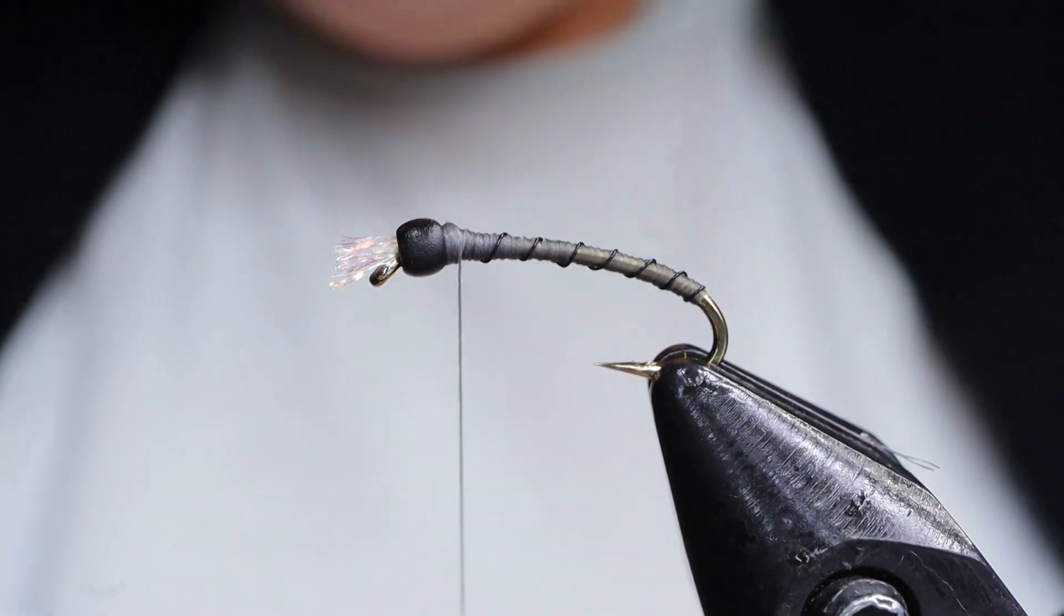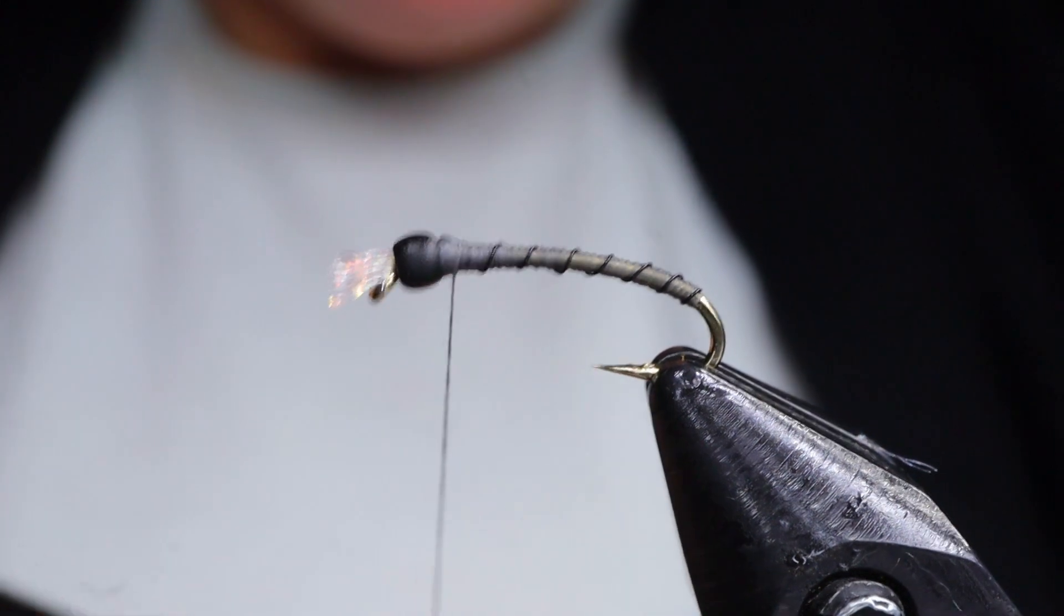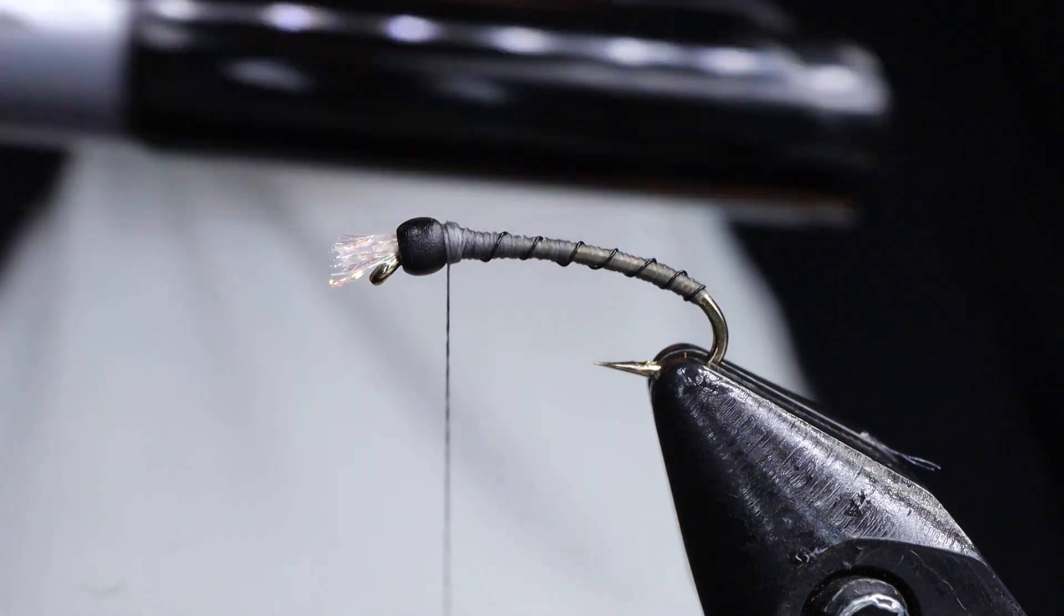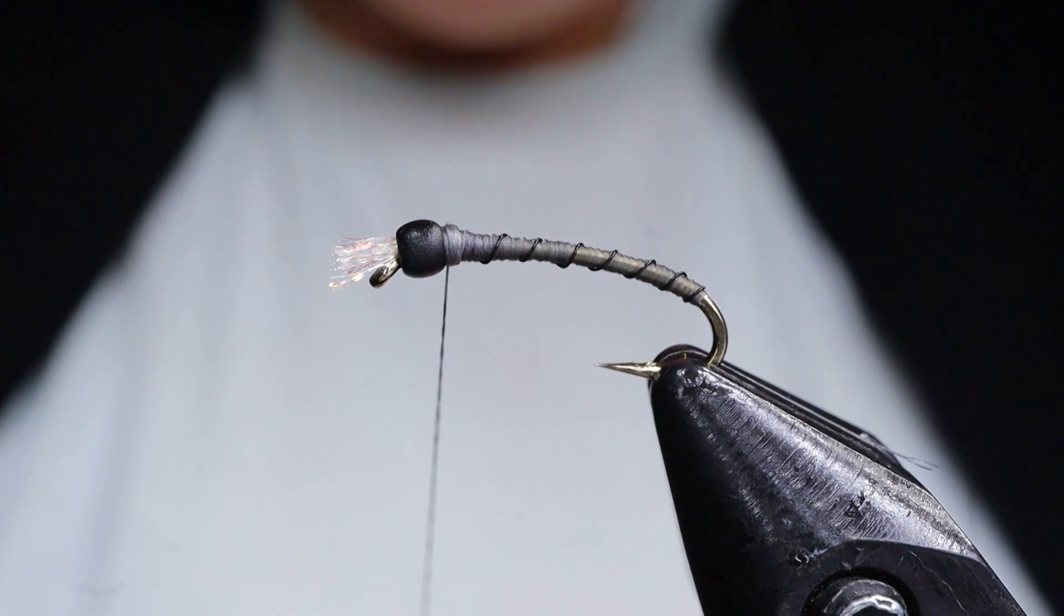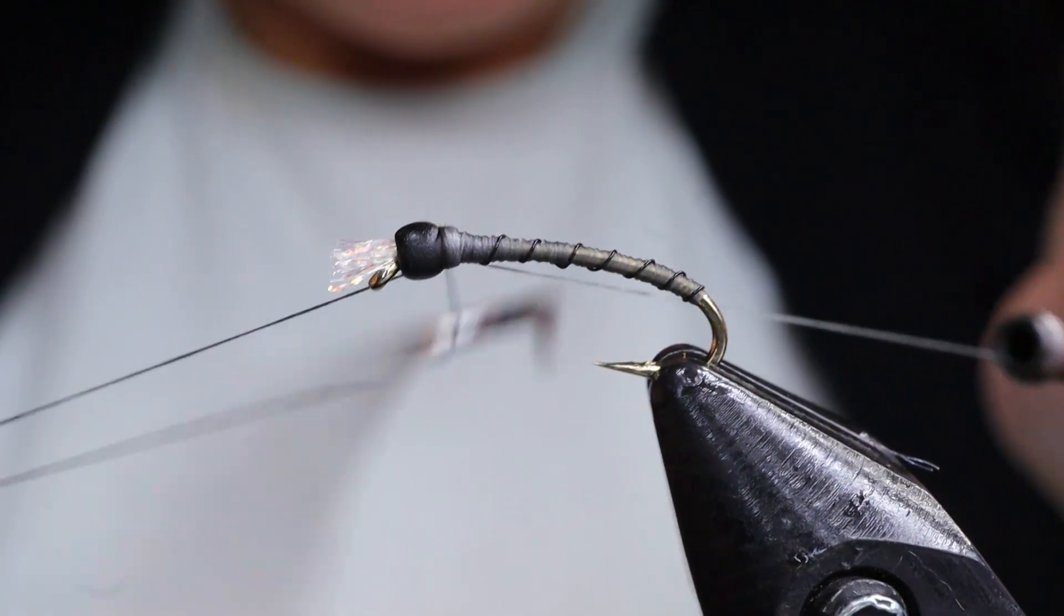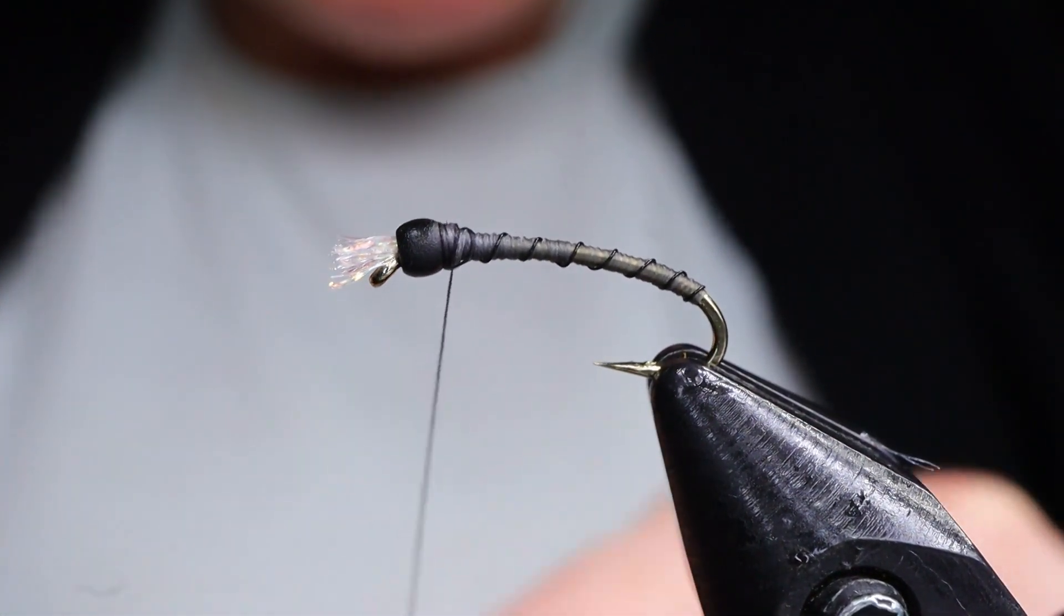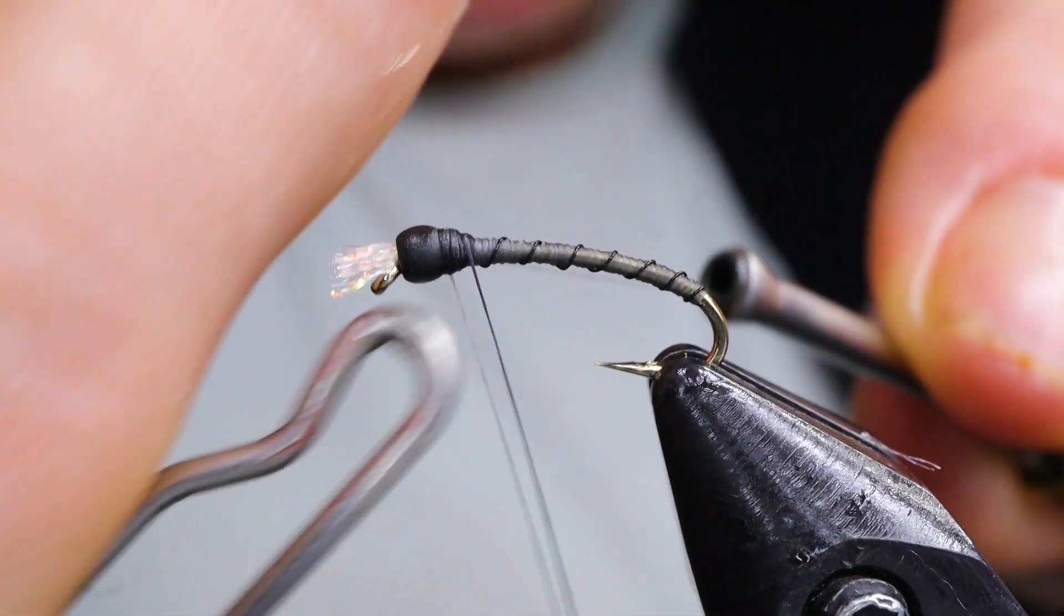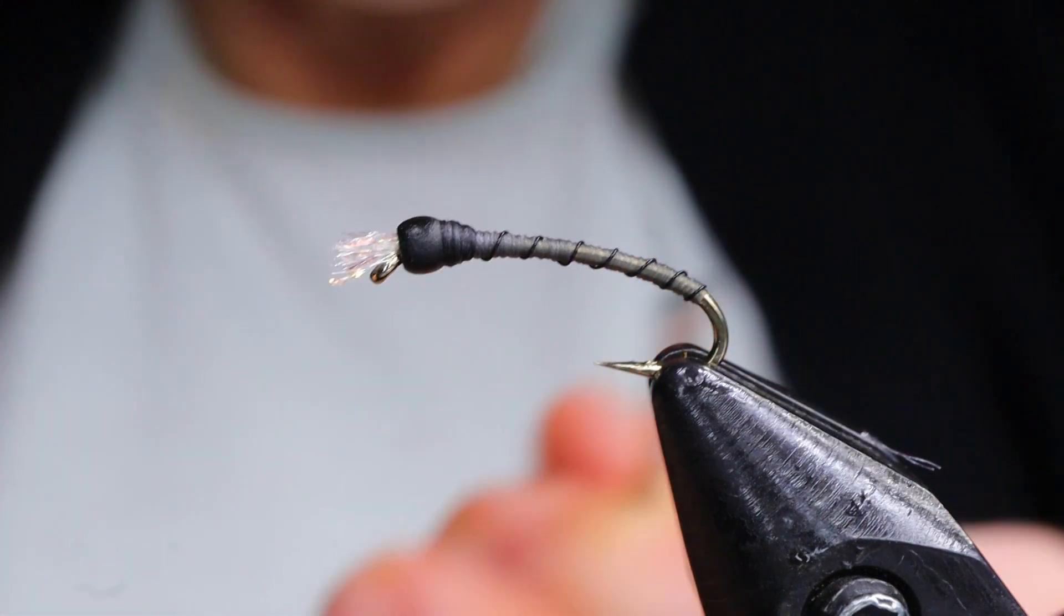Next, you can take a marker. Or you could change thread colors if you don't have a marker to black. I do prefer a black thorax on this fly. So I'm just going to color my thread black. I'm using an Artist's Loft marker. I get these at Michael's. And then I'm just going to whip finish. Pull your thread nice and tight before snipping it off.